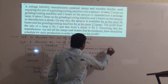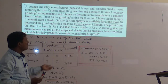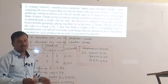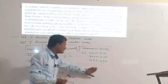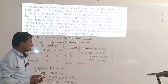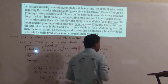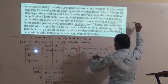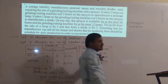To find the maximum profit — how many pedestal lamps and wooden shades the industry should manufacture — we will find the maximum value of the objective function by graphical method. For the first inequality 2x + y ≤ 12, we convert to the equation 2x + y = 12.